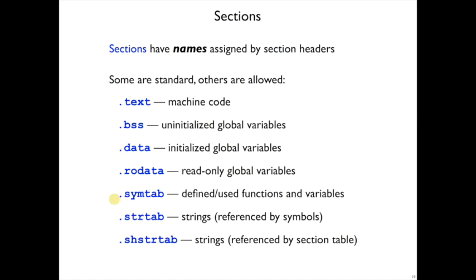The symbol table is going to have information about functions and variables with their names, but the symbol table is not actually going to have the names in it. It's going to have offsets into the string table to actually provide the names. That way, the symbol table can be a simple array of fixed-size records, while the string table takes care of the variable-size strings.